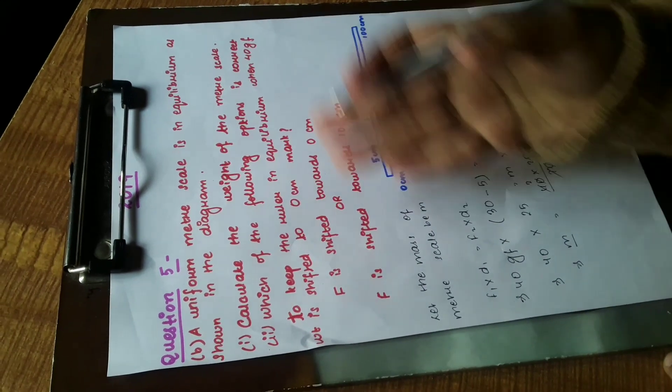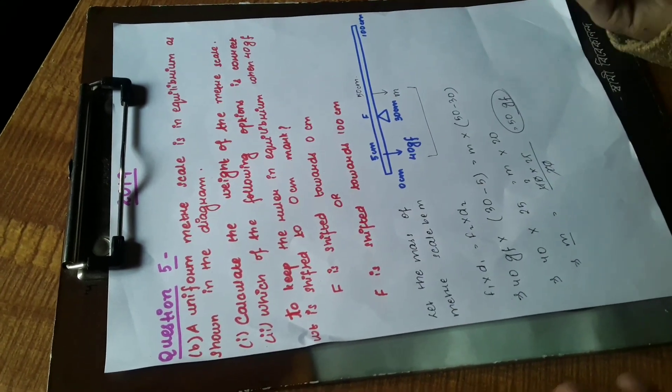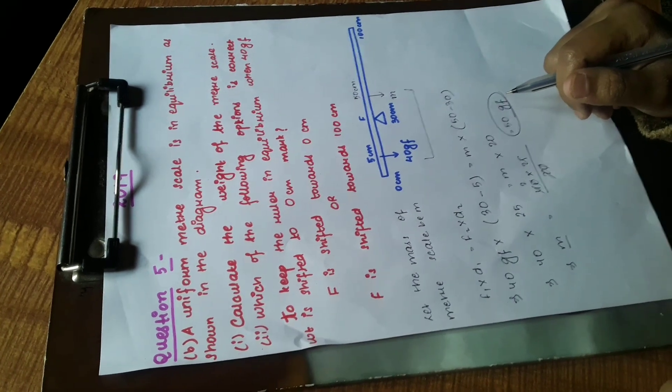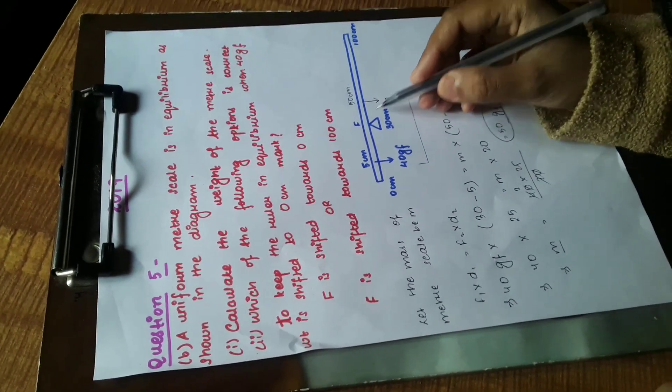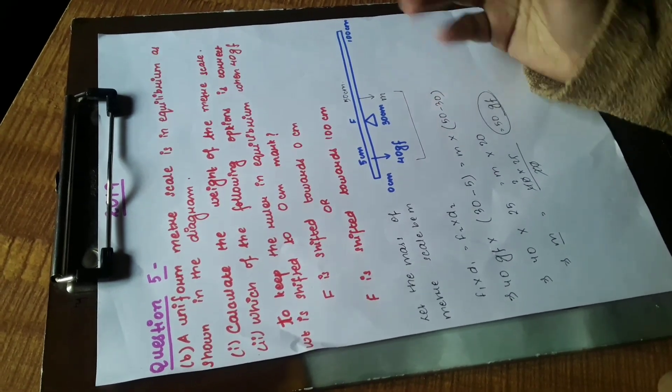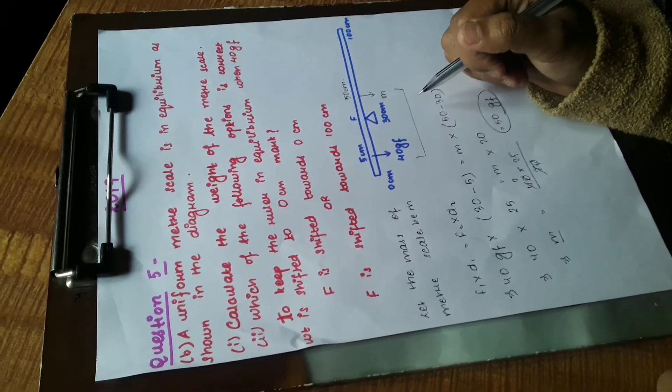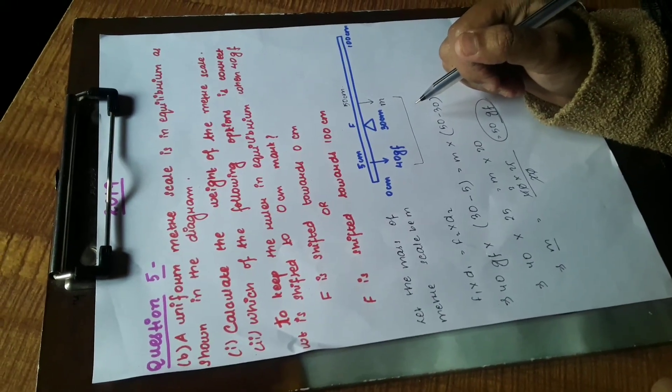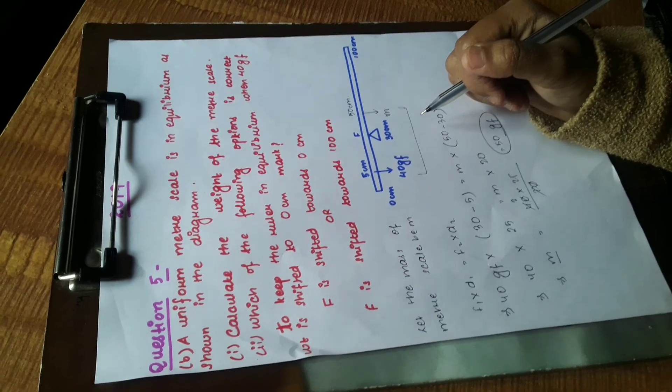It's a very simple portion. We can just imagine it in a practical way and finally write that the 30 centimeter support should always be moved towards the 100 centimeter mark in order to make the scale stationary. So this is it. Thank you and have a good day.